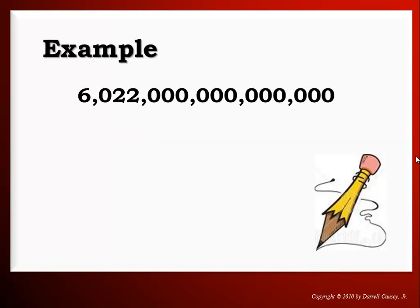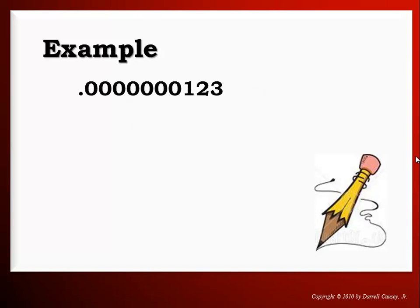An example would be this very long number, and we could write it as 6.022 times 10 to the 15. Or we could look at this very small number with a lot of zeros in front of it, and we could write it as 1.23 times 10 to the negative 8, making the numbers very easy to use.